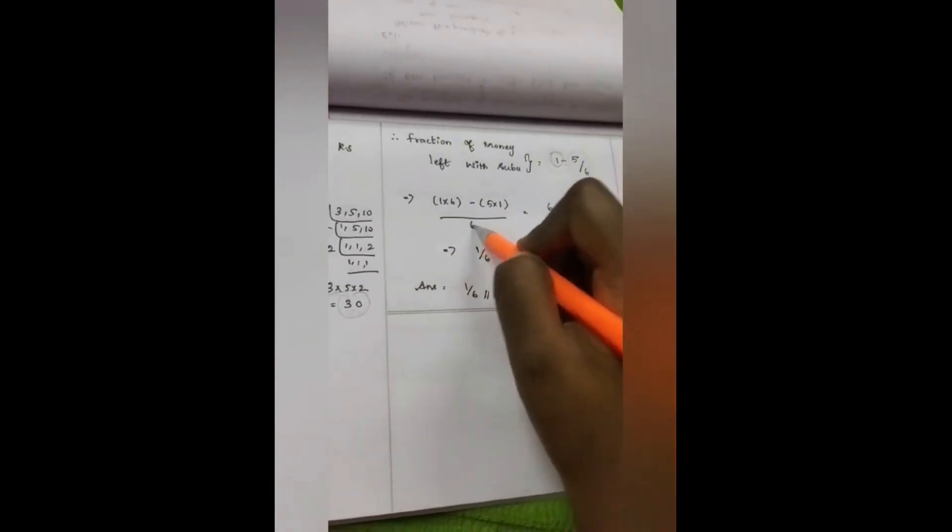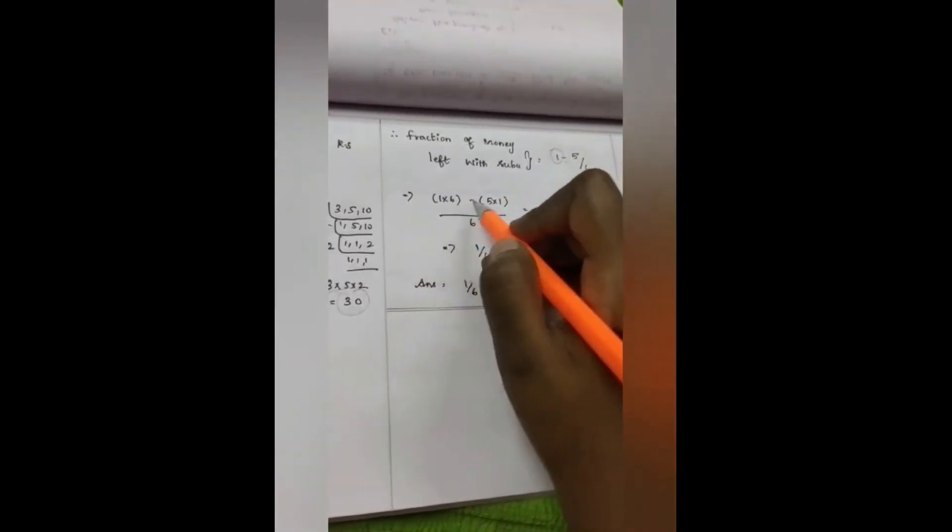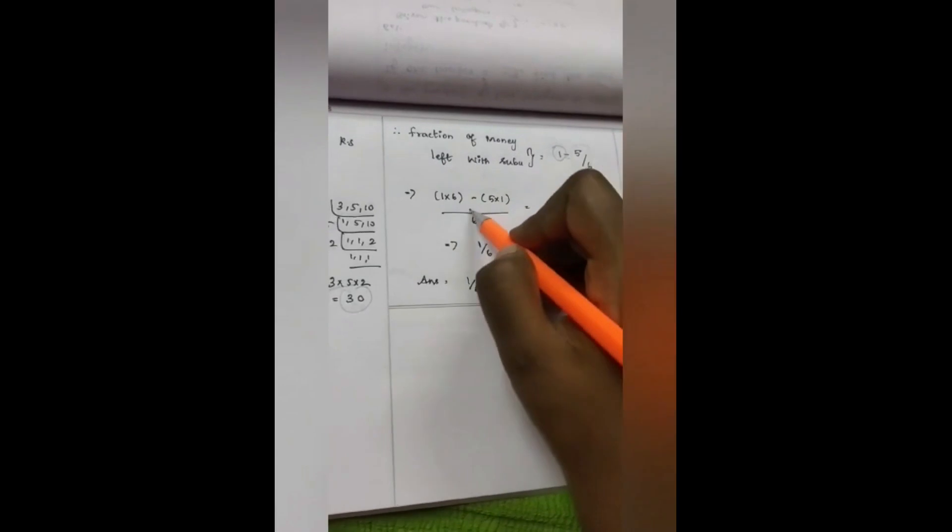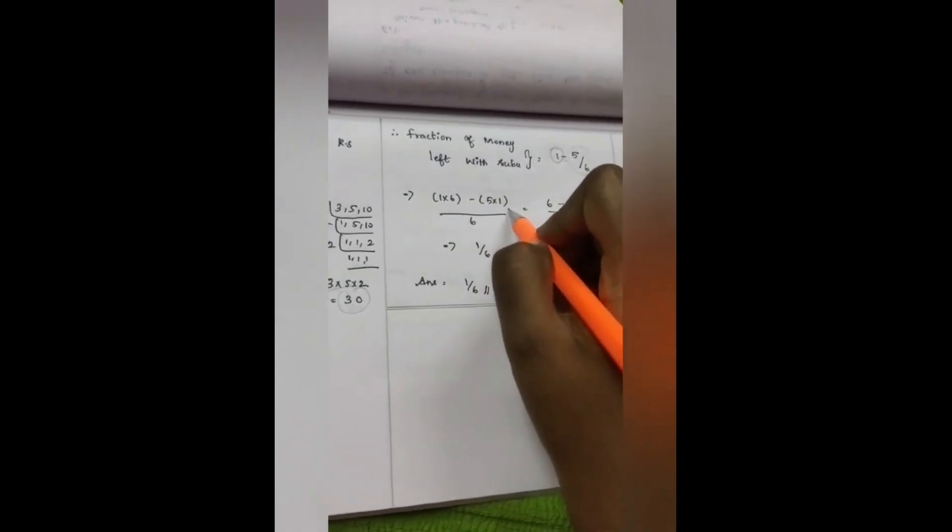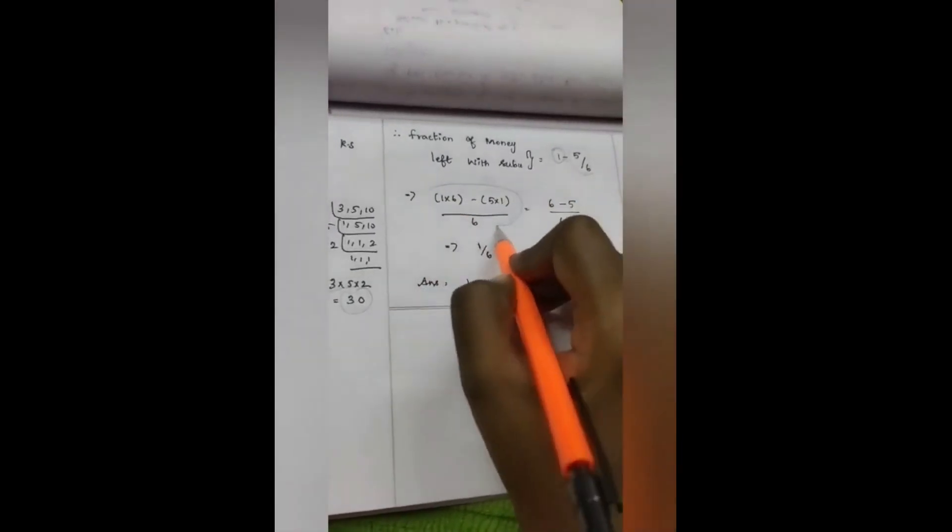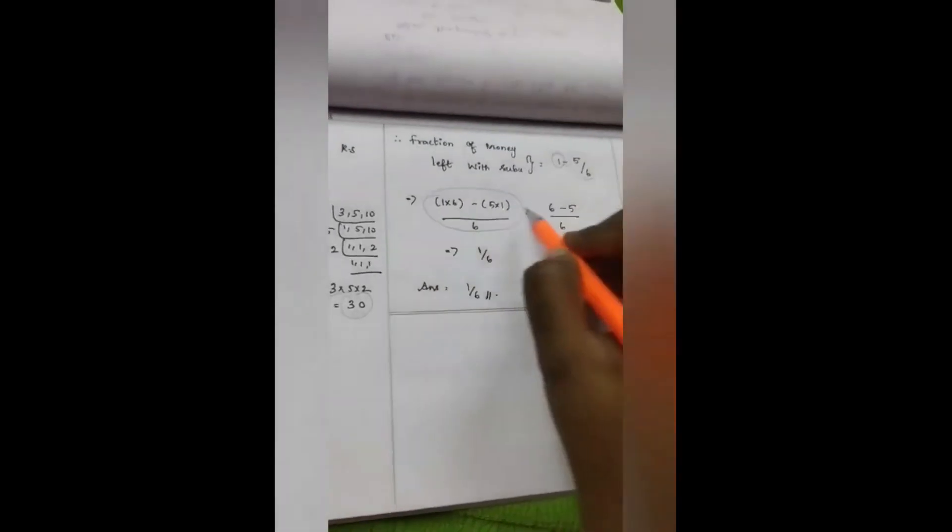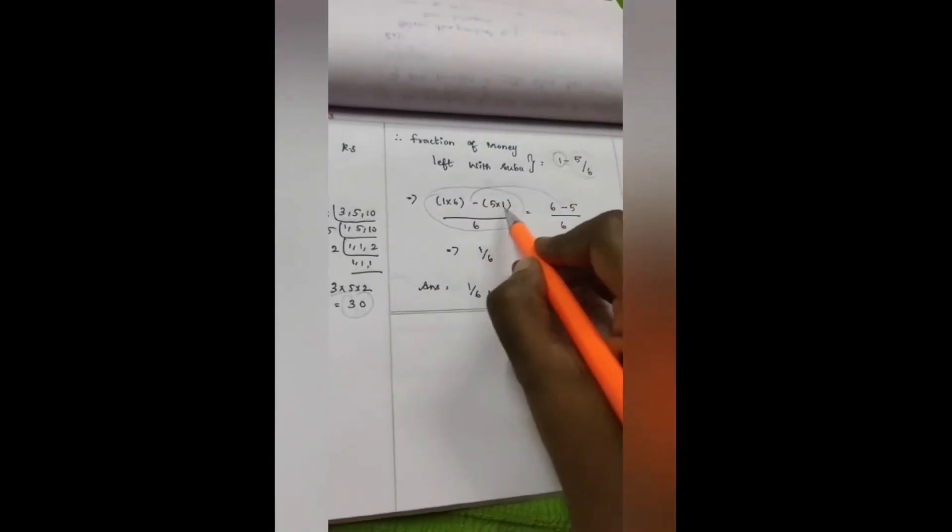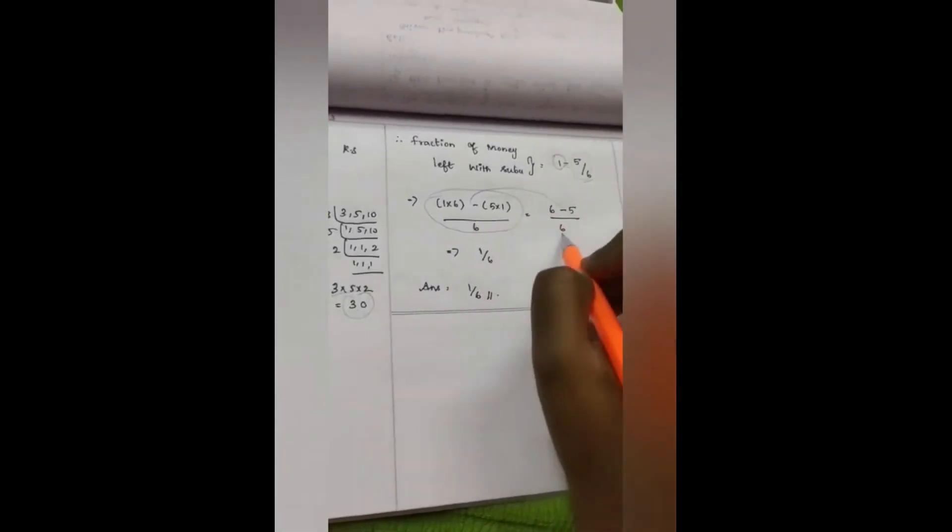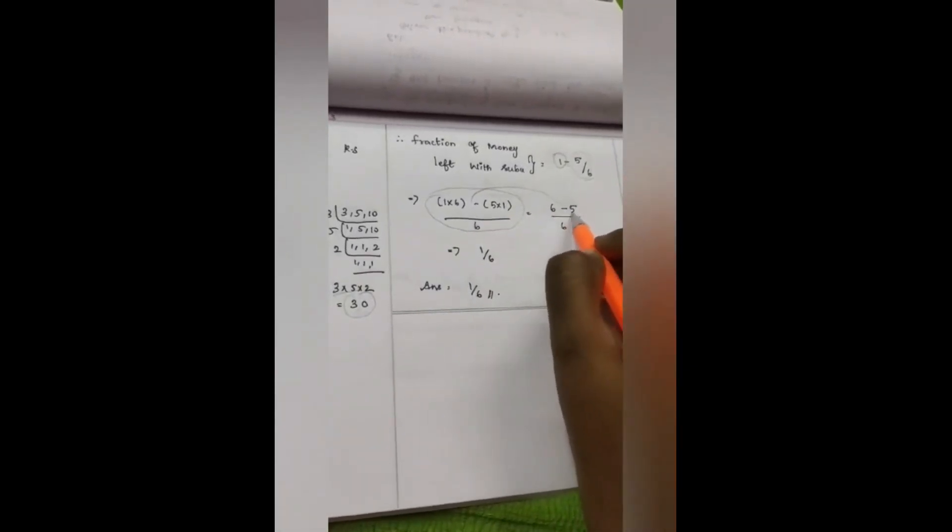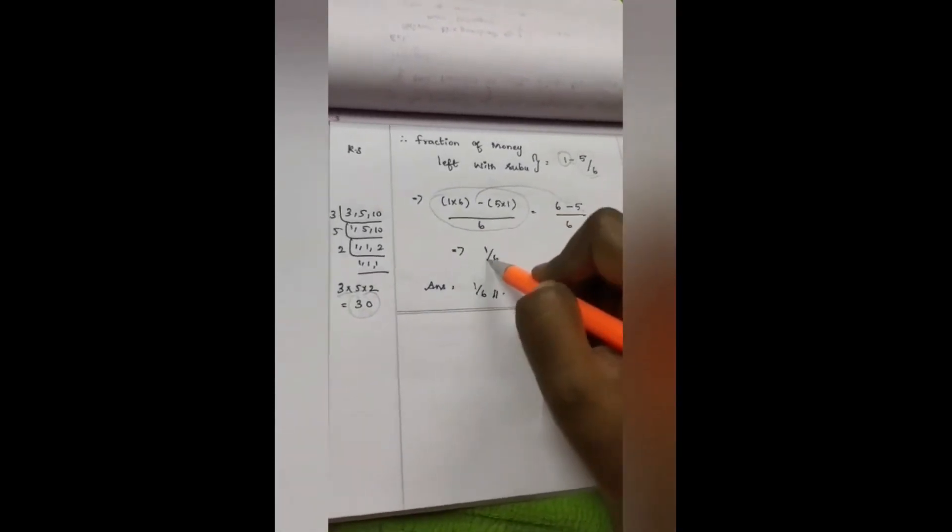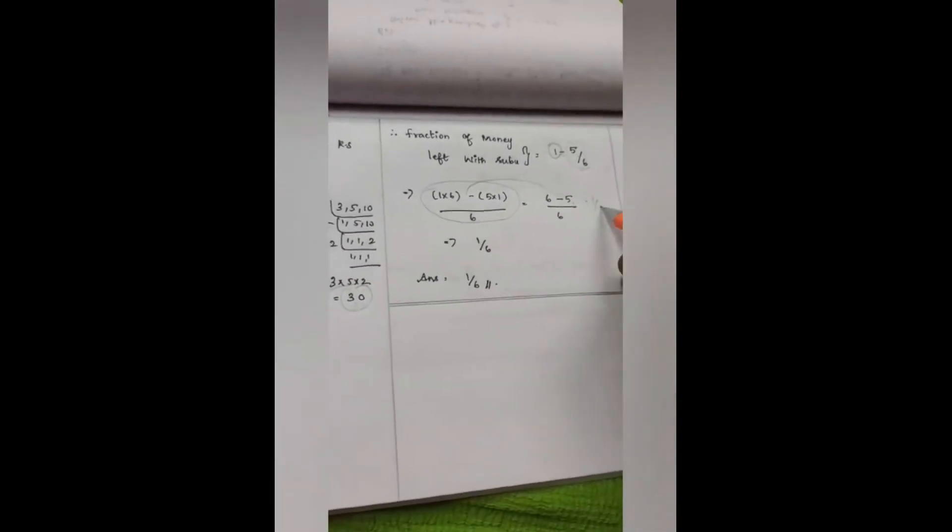For that, I'm writing here as 1 into 6 minus 5 into 1, same like this. This term becomes 1 into 6 is 6, minus 5 into 1 is 5, divided by 6. Simply 6 minus 5 which equals 1 by 6.